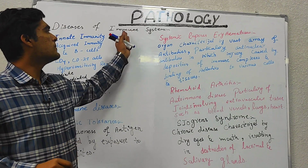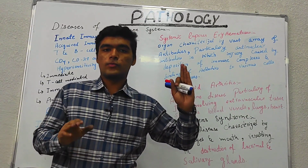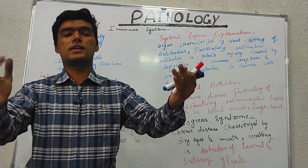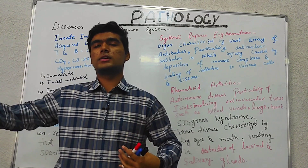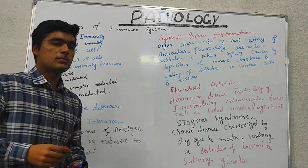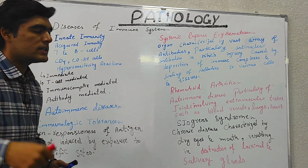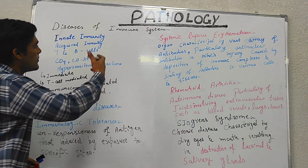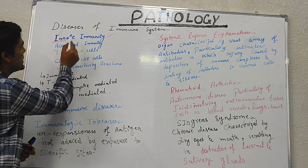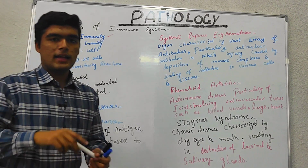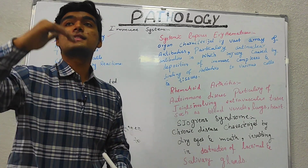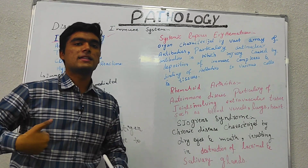Focus on this word 'immune system' — it is basically a system which is helping us to protect our body from foreign evaders, from foreign attackers. It is natural immunity that is always present in the body.